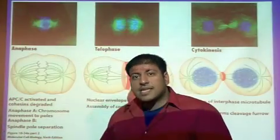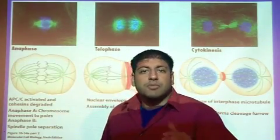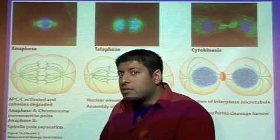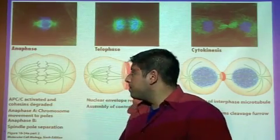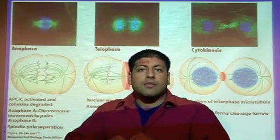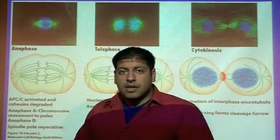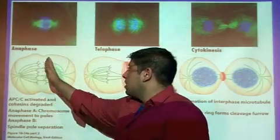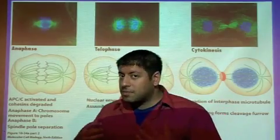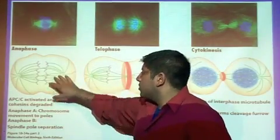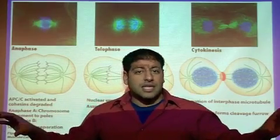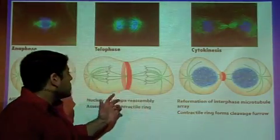After metaphase comes anaphase, split into anaphase A and anaphase B. In anaphase A, the duplicated sister chromatids are pulled apart — half pulled to the left pole, half to the right. Anaphase B involves the centrioles themselves being pulled and pushed even further apart, helping to stretch out the cell, which then leads into telophase.